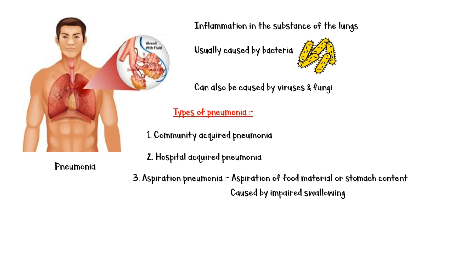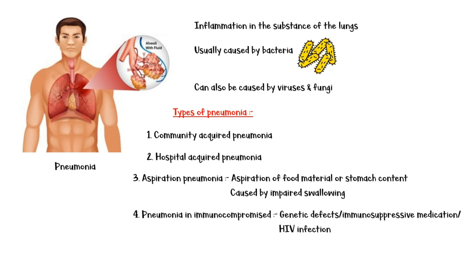Immunocompromised patients can acquire pneumonia due to a genetic defect, immunosuppressive medication, or due to HIV infection. Because the patient is immunocompromised in this type, it is considered as a different entity.